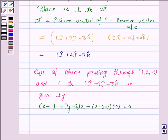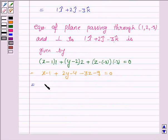and this equals X - 1 + 2Y - 4 - 3Z - 9 = 0, and this is again equal to X + 2Y - 3Z - 14 = 0.